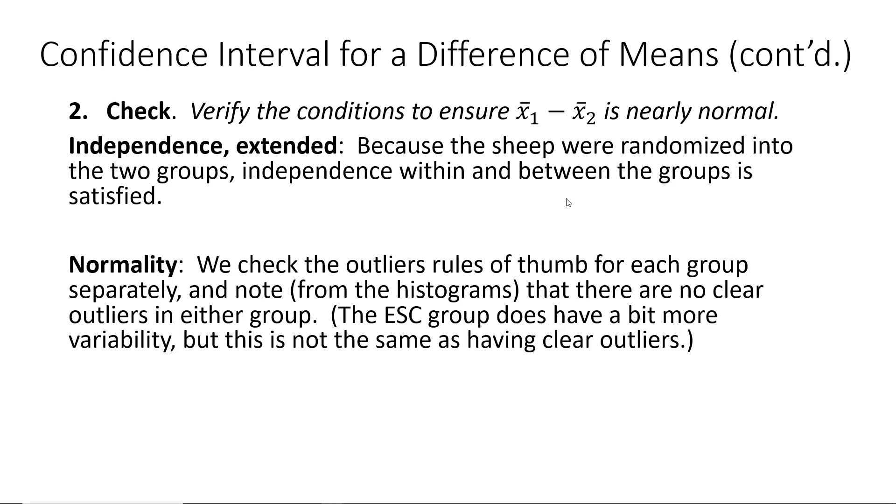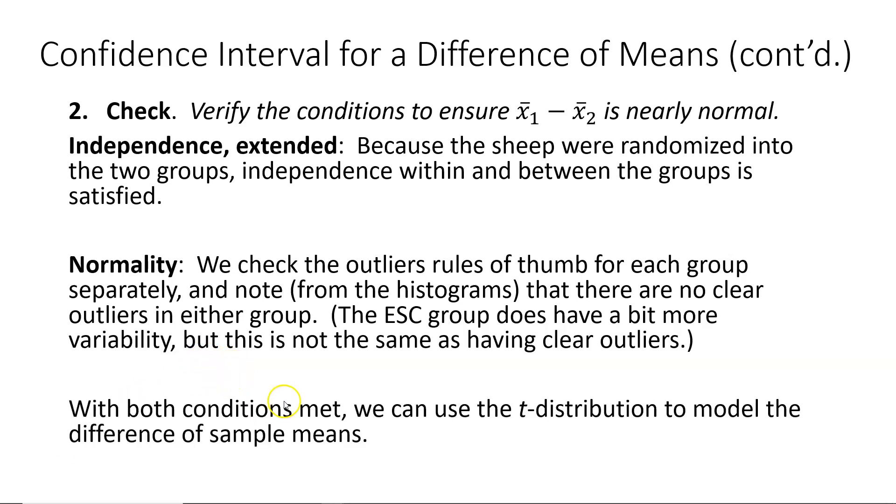Moving on to the normality check, we check the outliers rules of thumb for each group separately. We note from the histograms that there are no clear outliers in either group. Keep in mind that we're looking for clear outliers because the sample sizes for both groups was less than 30. We do take note that from the histograms, the ESC group does have a bit more variability, but that is not the same as having clear outliers. Therefore, since both conditions are met, we can use the t-distribution to model the difference of sample means.